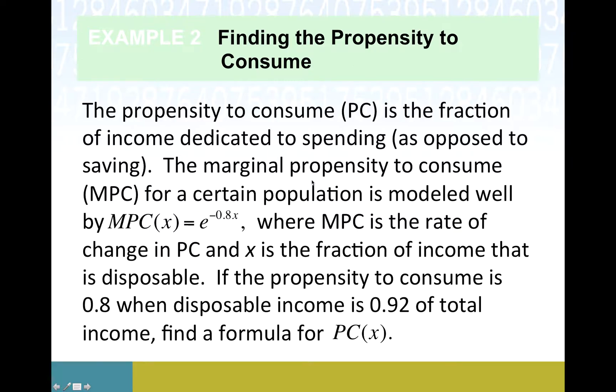The marginal propensity to consume, MPC, is given by this function, e to the negative 0.8x. We're not claiming this is going to be perfect, but we'll say for the sake of modeling that this does a good job. MPC is the rate of change in propensity to consume, and x is the fraction of income that is disposable, that is income that you are free to spend as you will, not locked up in some other fashion.